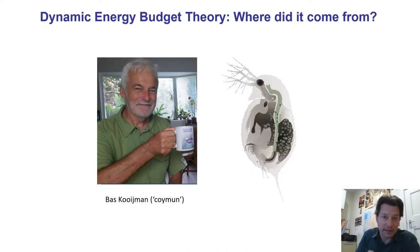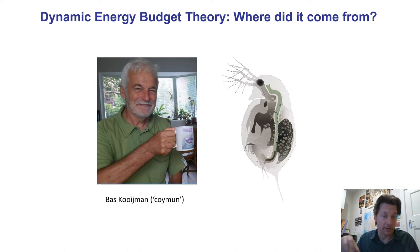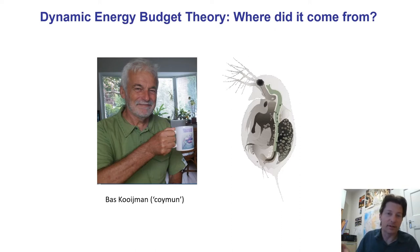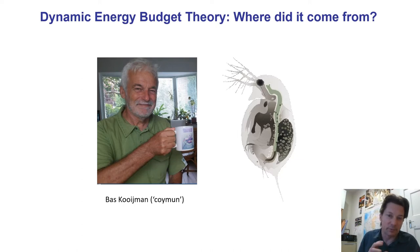Dynamic energy budget theory is a metabolic theory. There's been a lot of excitement about metabolic theory since about 2000, especially with a focus on work by Jim Brown and colleagues. DEB theory came from a Dutch scientist, Bas Kooijman, and is actually less well known — but it is doing what the metabolic theory aims to do, without some of the inconsistencies and issues that have been discovered with aspects of the metabolic theory of ecology.